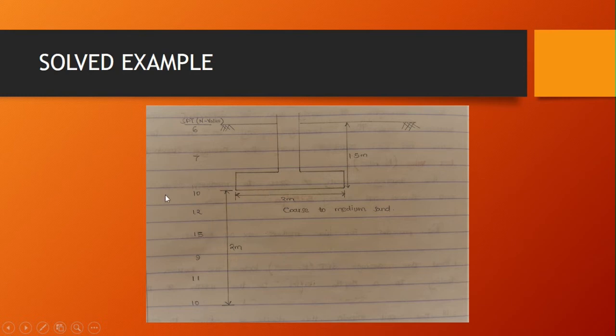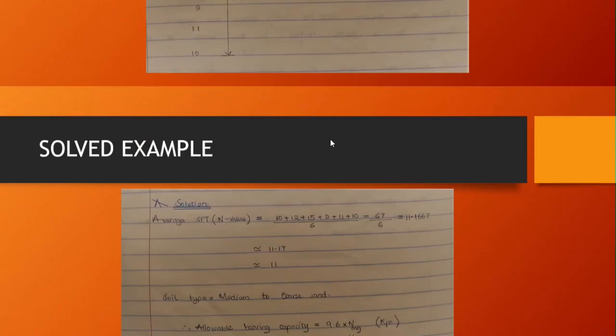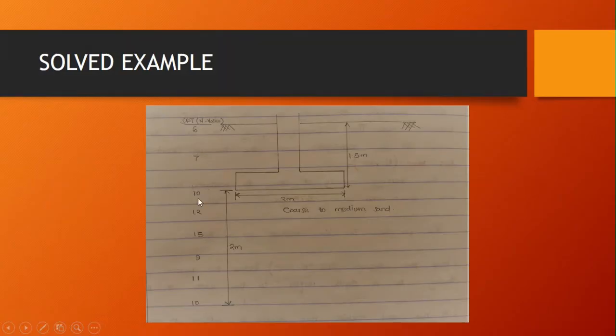To find the average SPT, you're going to add the values. We start from 10 plus 12 plus 15 plus 9 plus 11 plus 10, divided by the total number of SPT values which is six.